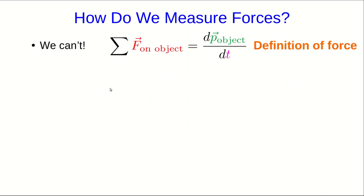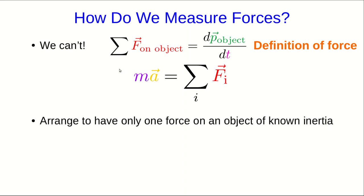Well, there is a way we need to use the definition of the force. Remember that the vector sum of forces is the rate of change of momentum, and that we can rewrite that this way as long as the inertia is constant. So all we need to do is have an object of a known inertia and arrange to have only one force act on it so that we get this simple version of the equation of motion, where I'll point out that this is only true when there's a single force.